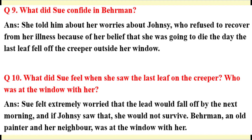Question 9: What did Sue confide in Behrman? Answer: She told him about her worries about Johnsy, who refused to recover from her illness because of her belief that she was going to die the day the last leaf fell off the creeper outside her window.